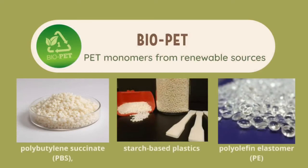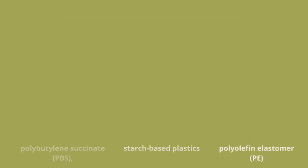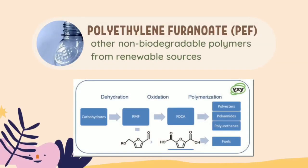Bio-based PET material is composed of 30% plant-derived ethylene glycol and 70% fossil-derived terephthalic acid (TPA). It is fully recyclable and a renewable bioplastic material. The Avantium YXY approach uses C6 sugars to produce furanics, then furan-decarboxylic acid, which when polymerized with bioethylene glycol will form biopolyethylene furanoate (PEF).